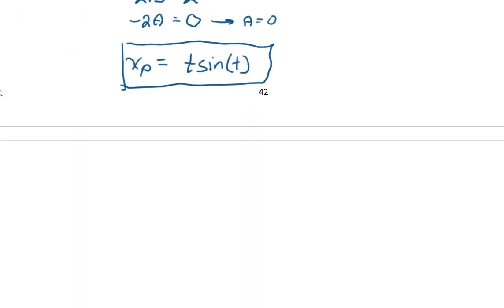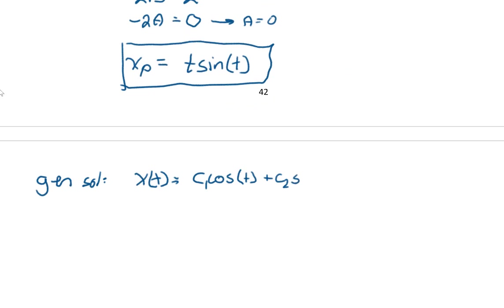This allows us to write the general solution using the non-homogeneous principle: x(t) = c₁ cos(t) + c₂ sin(t) + t sin(t).